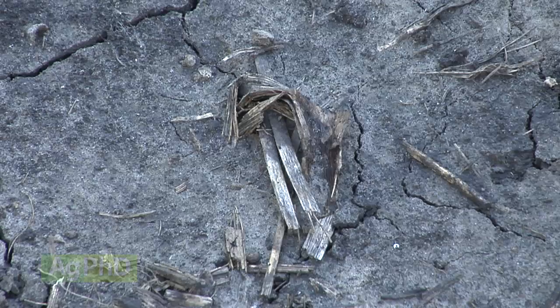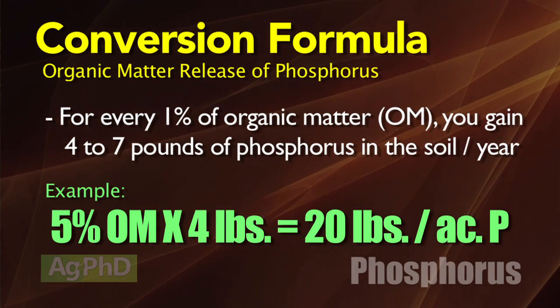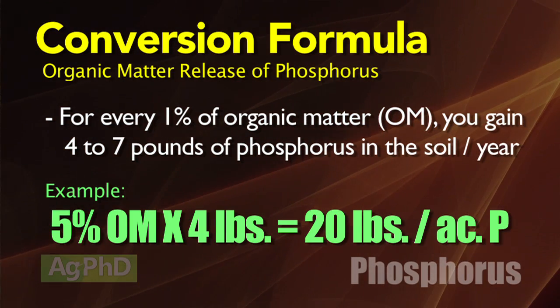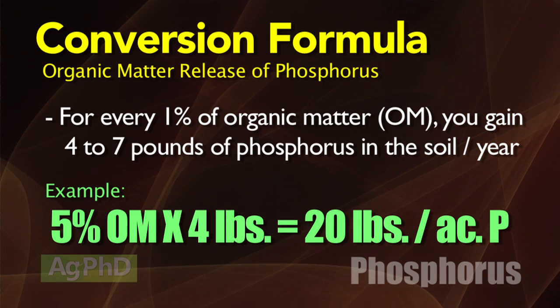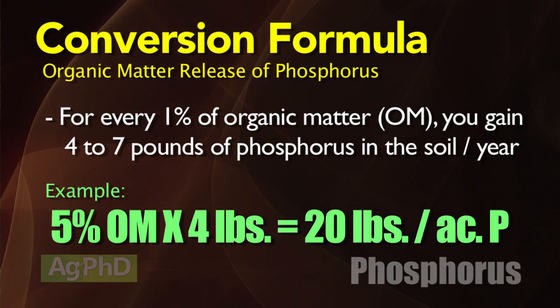Here's another measurement you don't normally think about in terms of how much phosphorus is out in your soil — organic matter. Why is that so important and how much phosphorus is there? It's mineralization. Your organic matter over a long period of time breaks down in your soil, and when it breaks down, it releases nutrients for free every year. For each 1% of organic matter, you're going to get approximately 4 to 7 pounds of phosphate. So if you had 5% organic matter, figuring on the low side at 4 pounds, 5 times 4 is 20 — you'd have about 20 pounds of phosphate coming available every year for free.